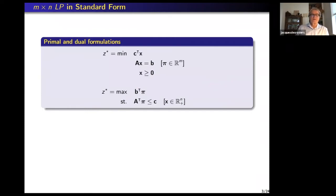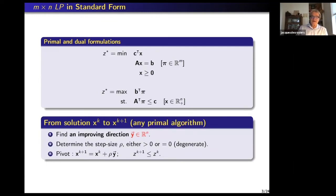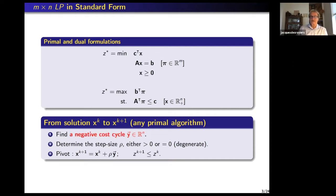We will adapt most of these things to linear programs — I won't give proofs of all the theorems. We have a linear program in standard form with M constraints and variables. From any solution x_k to the next one, for any primal algorithm, what we need to do is find an improving direction in dimension N, meaning we can move forward or backward according to the given x. Then we determine a step size that is either zero or greater than zero. If it is zero, it is degenerate.